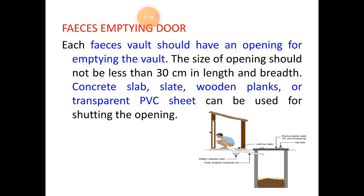The next component is the feces emptying door, which is the opening for emptying the tank of excreta. It is generally a concrete slab, slate, wooden plank, or even a transparent PVC sheet. The first part of the structure is the squatting room, and the next part is the fecal chamber covered with the slab. The slab is covered to prevent bad odor from expelling from the tank and to prevent vector flies and their breeding into the chamber.